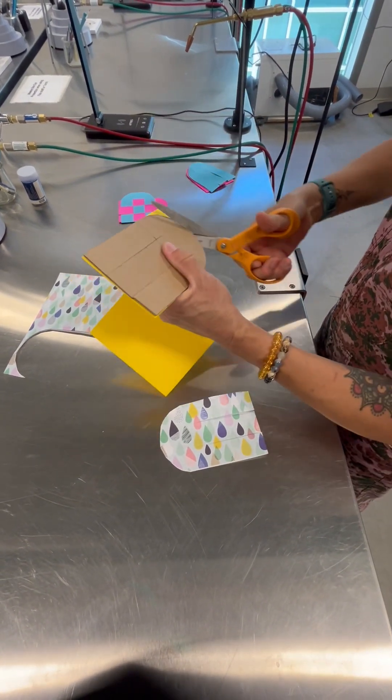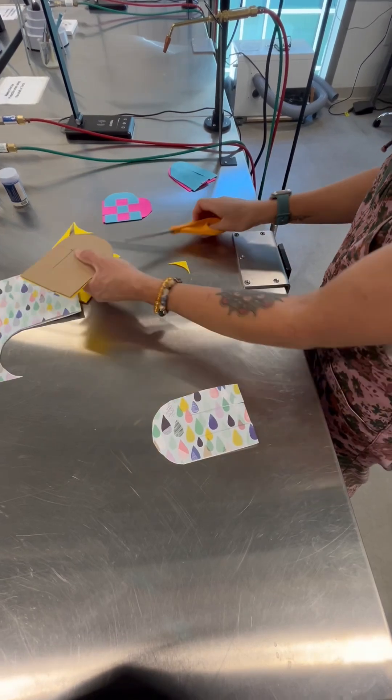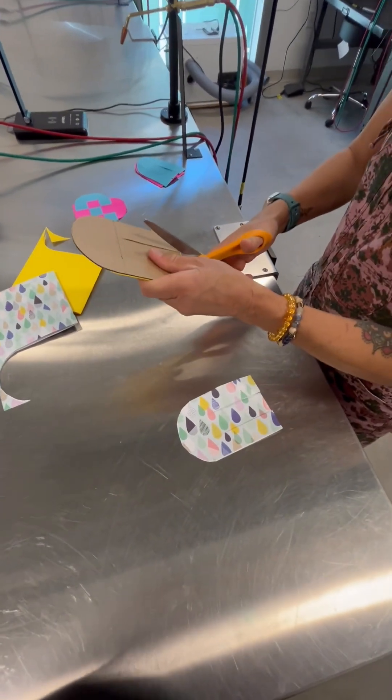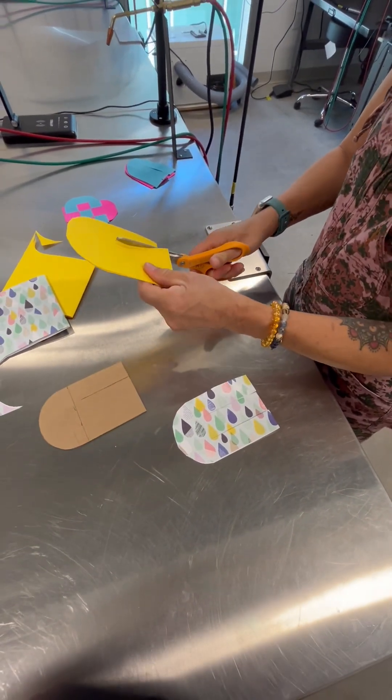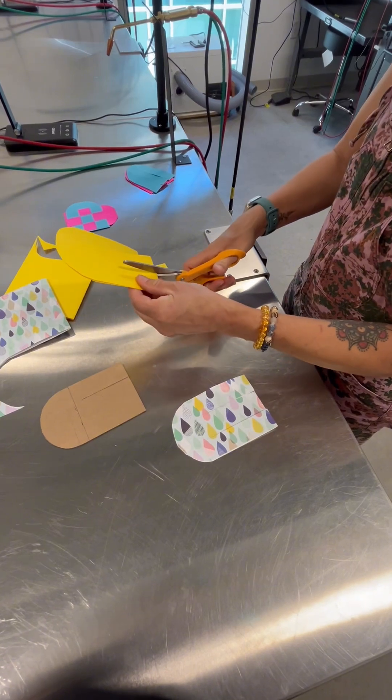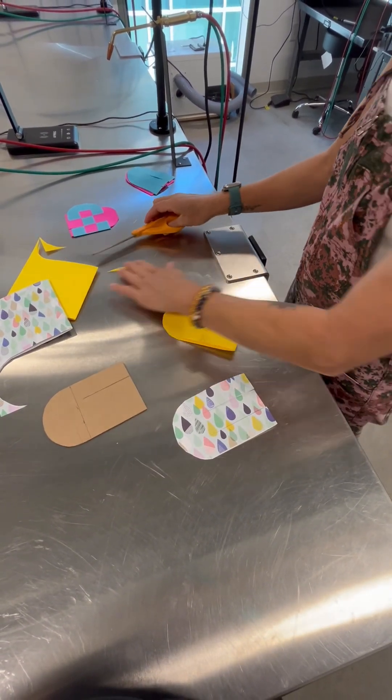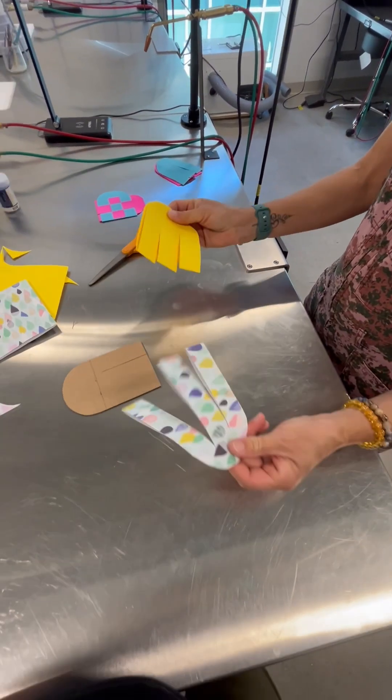It doesn't have to be perfect. You can always smooth those edges out later. And then cut to about an inch. And now you have two pieces.